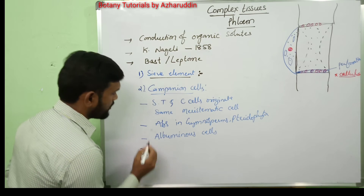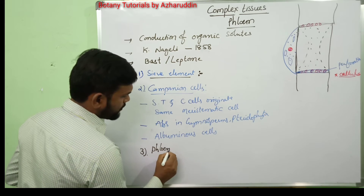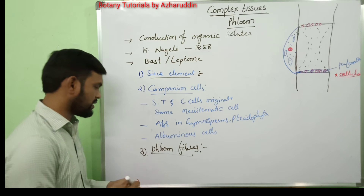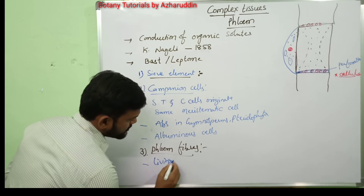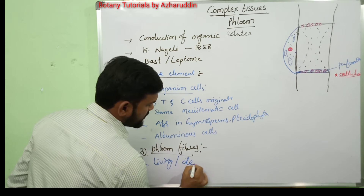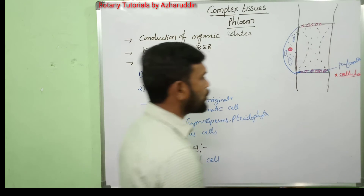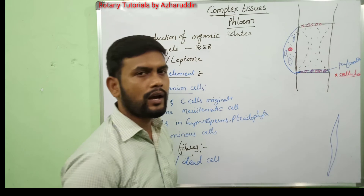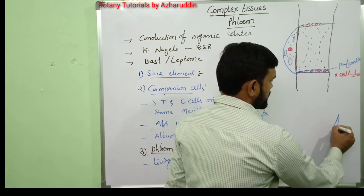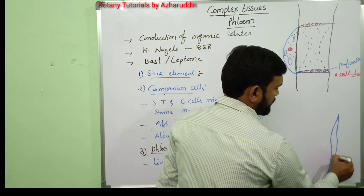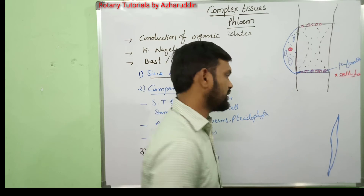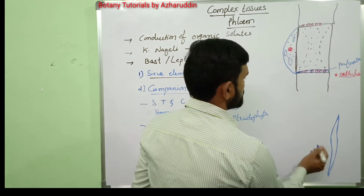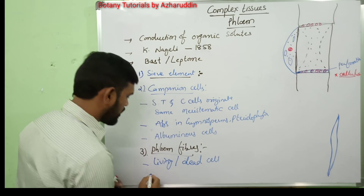The third element is phloem fibers. These are generally dead cells — narrow, elongated, thread-like structures. The cell wall is made up of lignin, and the protoplast is generally absent. The fibers associated with phloem are called bast fibers.